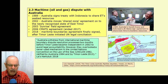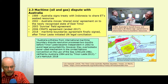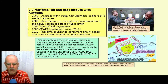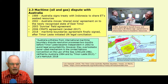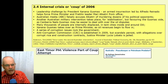The NGO La'o Hamutuk in Timor commented in 2018: Australia withdrew from international maritime boundary dispute resolution processes two months before Timor-Leste became independent in 2002 to avoid legal accountability. However, they overlooked a never-used mechanism in the UN Convention on the Law of the Sea, which had been ratified by both Australia and Timor-Leste. This dispute put a lot of strain on relations between the newly independent East Timor and its big neighbour Australia, and that became a factor in the internal crisis of 2006.